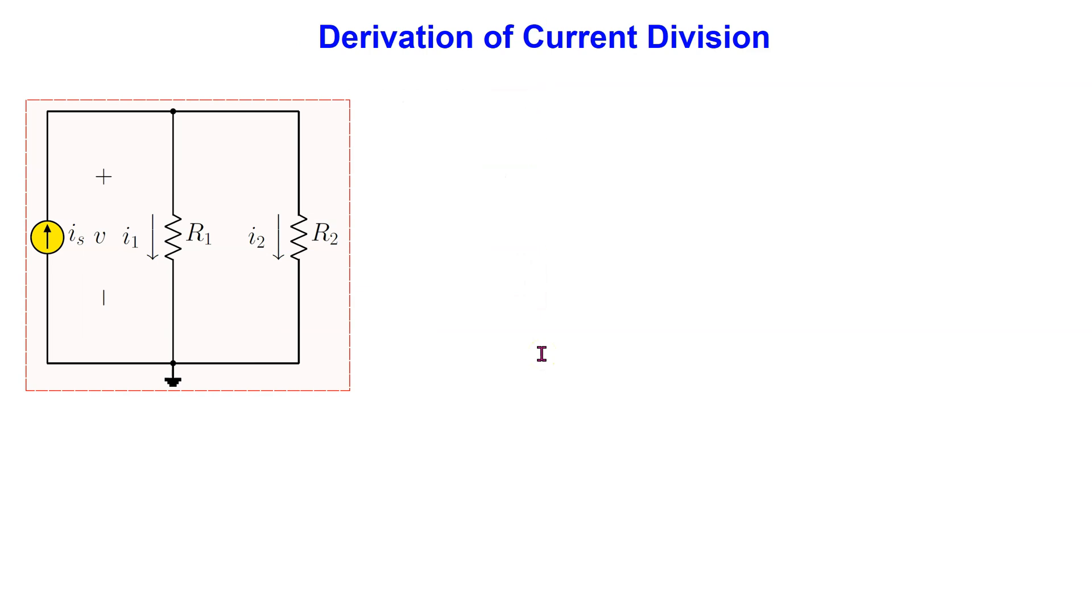The current division principle applies to resistors connected in parallel. In such circuits, the current through any resistor is inversely proportional to the magnitude of the resistor.